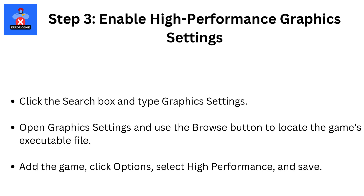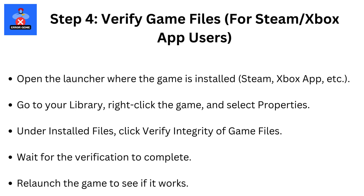Step 3: Enable high-performance graphics settings. Click the search box and type Graphics Settings. Open Graphics Settings and use the Browse button to locate the game's executable file. Add the game, click Options, select High Performance, and save.